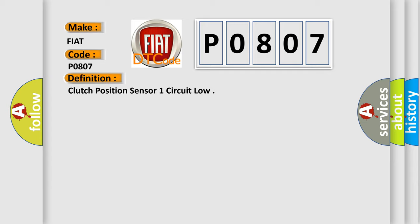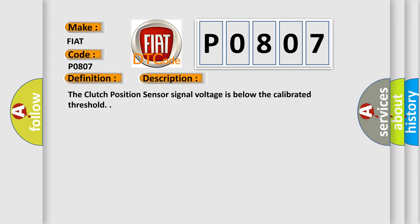And now this is a short description of this DTC code. The Clutch Position Sensor signal voltage is below the calibrated threshold.